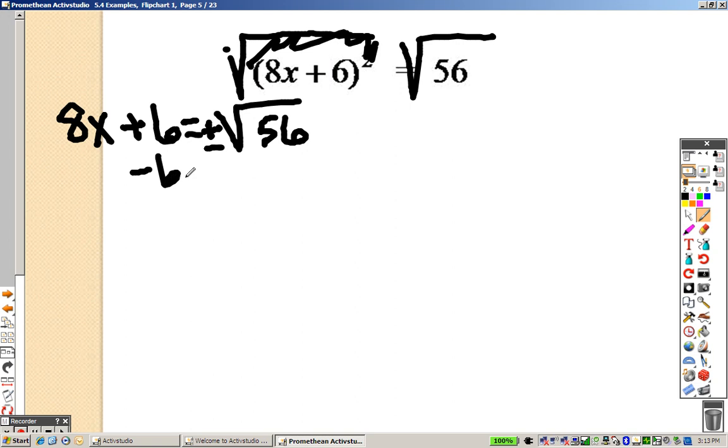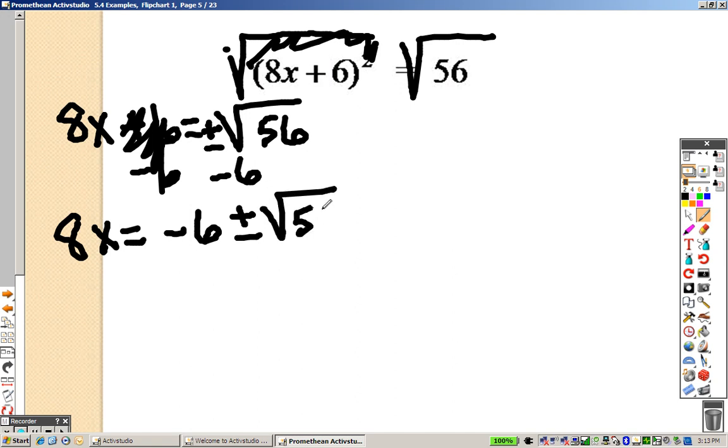So since it's plus 6, I would subtract 6 on both sides. And just like the last problem, that's 8x equals negative 6 plus or minus the square root of 56. And 8 times x, that's like saying now, divide both sides by 8.